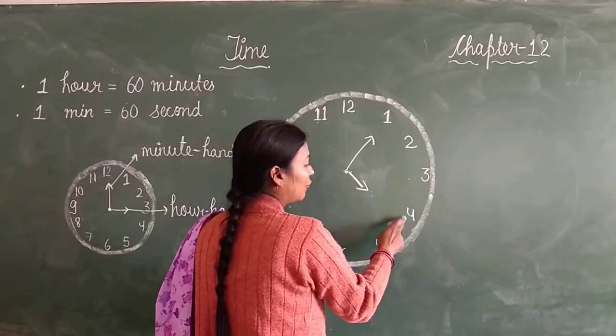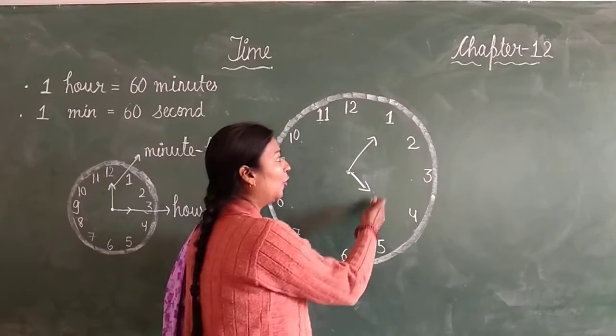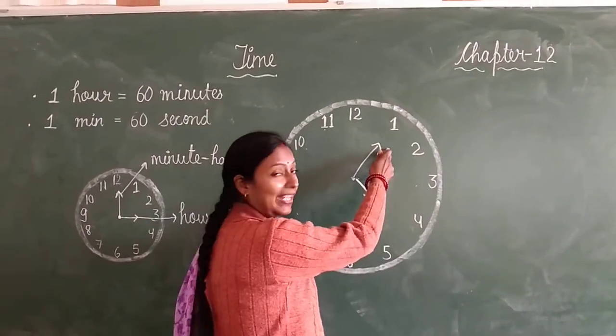Now the short hand is on 4. Then what is the time? That will be 4 o'clock and 5 minutes.